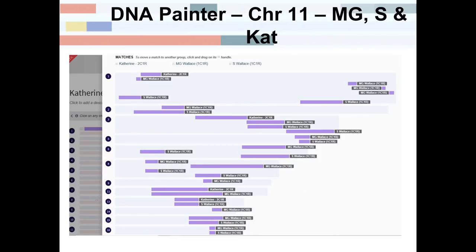Now we've added S, who is MG's brother. On chromosome 11, I have this segment in common with MG and with CAT, but not with S. That's another area I look at to see how much DNA I have in common, because siblings inherit DNA differently. On chromosome 5, I have less in common with S than with MG — they're brothers, but even that segment is slightly shorter in S. It's just random the way it happens.